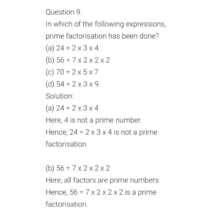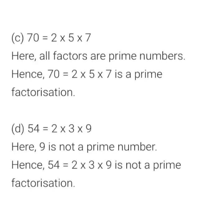Hence 24 = 2 × 3 × 4 is not a prime factorization. For 56: 7 × 2 × 2 × 2 — here 7 and 2 are both prime numbers, so this is prime factorization. For 70 = 2 × 5 × 7 — all factors are prime numbers, so this is prime factorization. For 54 = 2 × 3 × 9 — 9 is not a prime number, it is composite, so this is not a prime factorization.